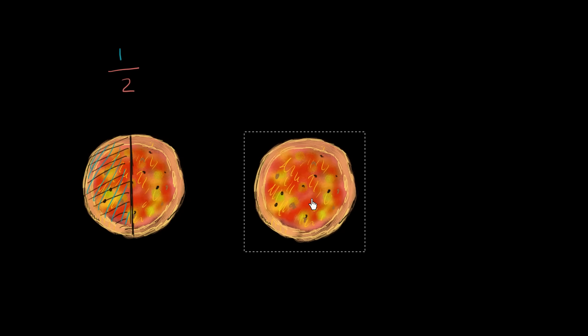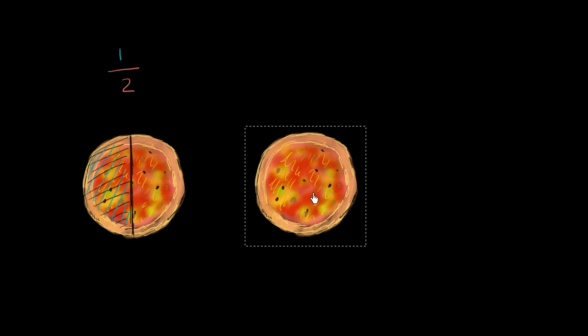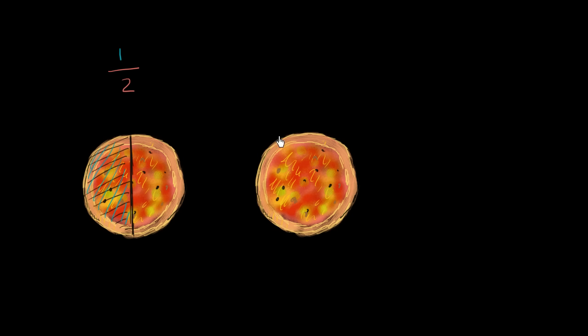Now let's imagine that instead of cutting that pizza into only two equal pieces, let's imagine instead that I decided to cut it into four equal pieces. So let's draw that. I could cut it once this way, and then I could cut it once this way. And so here I have four equal pieces.